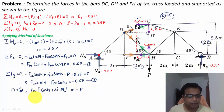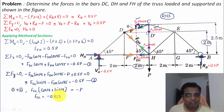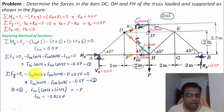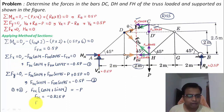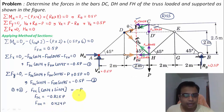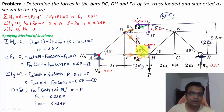Solving gives F_DC = −0.825P. The negative sign indicates that member DC is under compression. Substituting back into Equation 1 or 2 gives F_DH = 0.424P. The positive sign confirms that member DH is under tension.